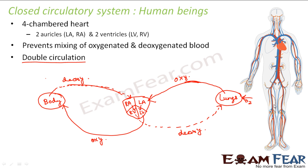In one complete cycle, the oxygenated blood passes the heart once, and then the deoxygenated blood passes the heart again. So in one cycle the blood passes the heart two times — that is why this is also known as double circulation. In this case the blood is enclosed in vessels, and because of that the blood is at a higher pressure.